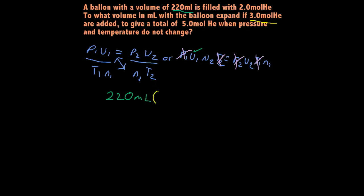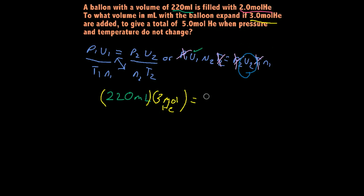That's going to equal our V2 — which is actually what they're wanting to know, to what volume in milliliters. So it's wanting to solve for V2. And it does give us our N1, our first set of moles. Our N1 is the 2 moles of helium. So our equation is: 220 milliliters times 3 moles equals V2 times 2 moles of helium.